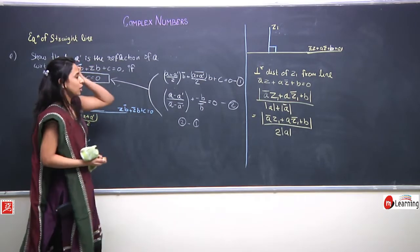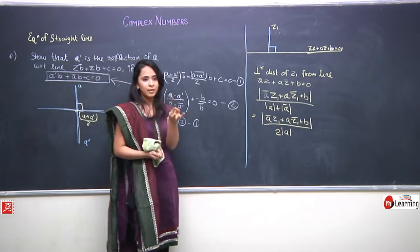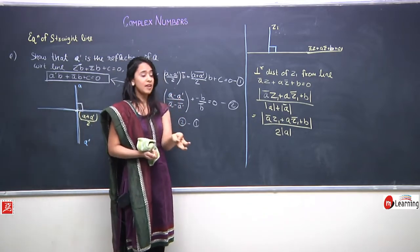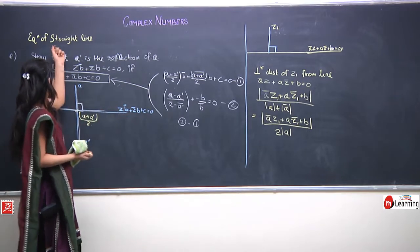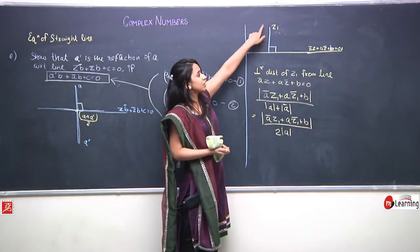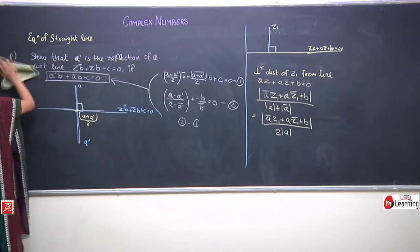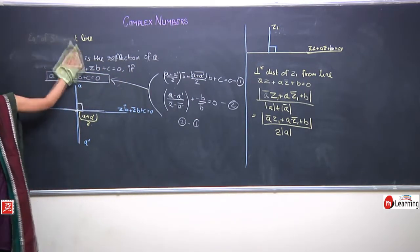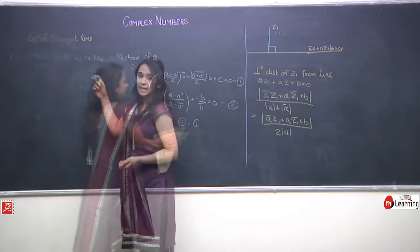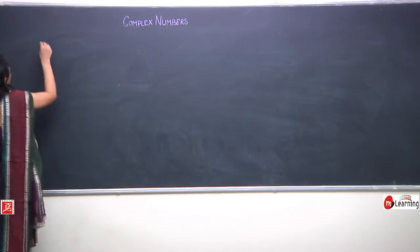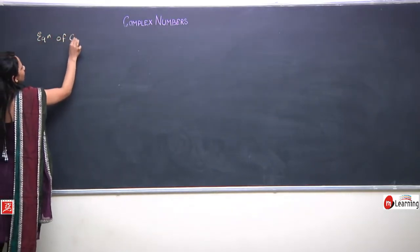This is the general formula for the perpendicular distance of any point z1 with respect to the line ā·z + a·z̄ + b = 0. We have now studied many things related to equations of straight lines: the parametric form, non-parametric form, conditions for parallel and perpendicular lines, and the perpendicular distance formula. Let us now move to our next topic: finding the general equation of a circle in case of complex numbers.